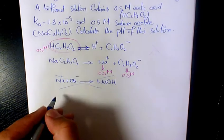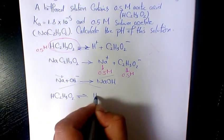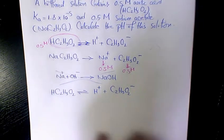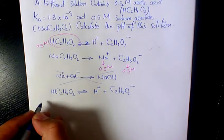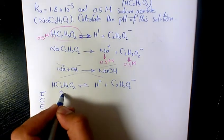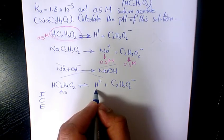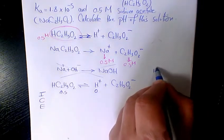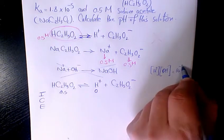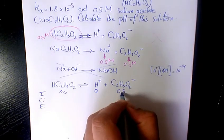For equilibrium, I can write: acetic acid dissociates into a proton plus C2H3O2 minus. Setting up the ICE table — Initial, Change, Equilibrium — initially we have 0.5 molar of acetic acid, approximately 0 for the proton (since that's on the order of 10 to the negative 7, we approximate it as 0), and 0.5 molar of acetate.